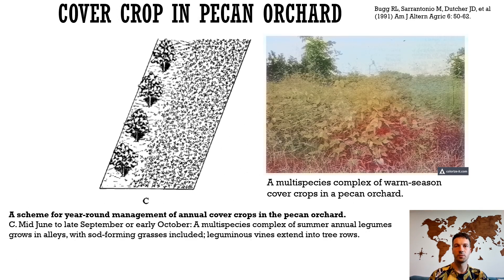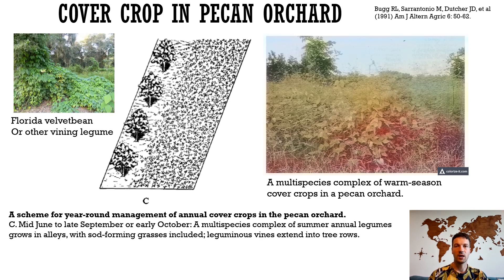Warm season cover crops should be restricted to alleys to reduce possible competition for water with pecan, where they will also receive better illumination when trees are in leaf. Supplemental phosphorus can increase shade tolerance. Seeds of warm season legumes such as showy partridge pea and hairy indigo may be broadcasted; however, seeds of the majority of legumes require drilling or disking for better establishment. Summer cover crops can include vining species, which will run into tree-row strips over the dead mulch provided by winter cover crops, to additionally limit weed growth under trees.